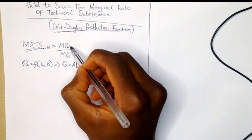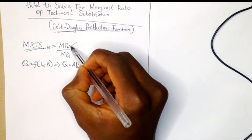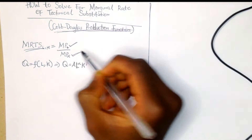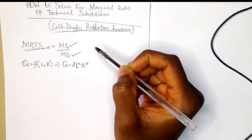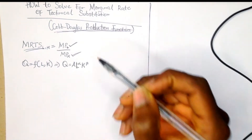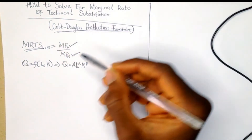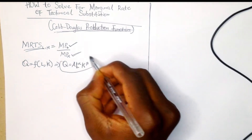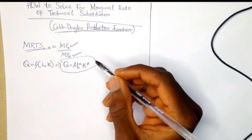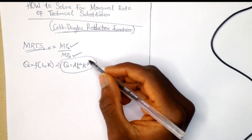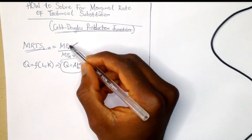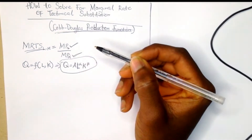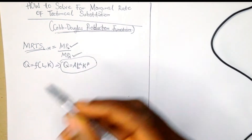...the marginal product of labor over the marginal product of capital. To get the MRTS from our Cobb-Douglas production function, we have to solve for the marginal product of labor and the marginal product of capital.